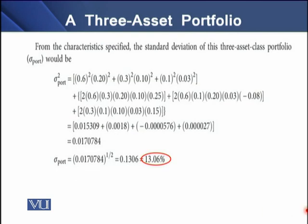When we put the corresponding values into this three asset portfolio formula of portfolio standard deviation, the resulting standard deviation is 13.06%.